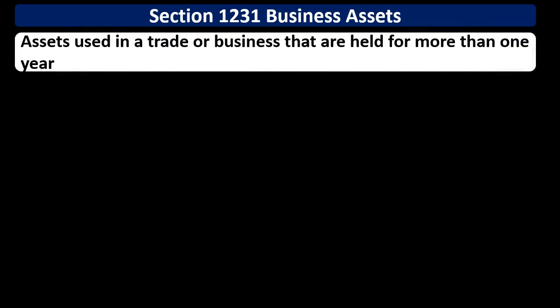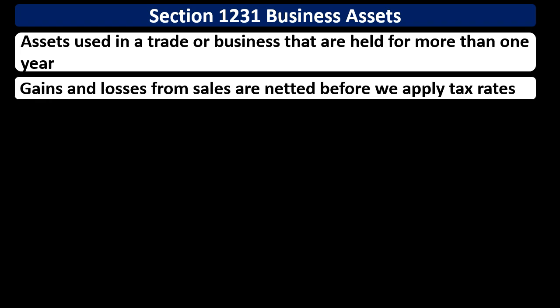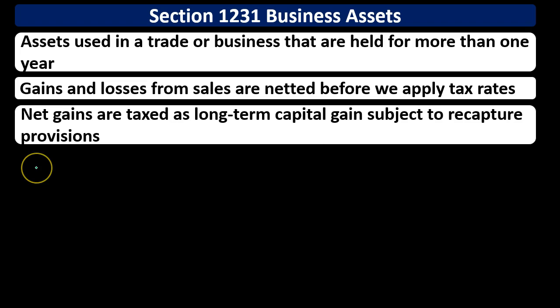Section 1231 business assets are assets used in a trade or business that are held for more than one year. Gains and losses from sales are netted before we apply taxes. Net gains are then taxed as long-term capital gains, subject to recapture provisions. This is typically preferential tax treatment — not using the progressive tax tables, but rather long-term capital gains rates, which are usually beneficial.